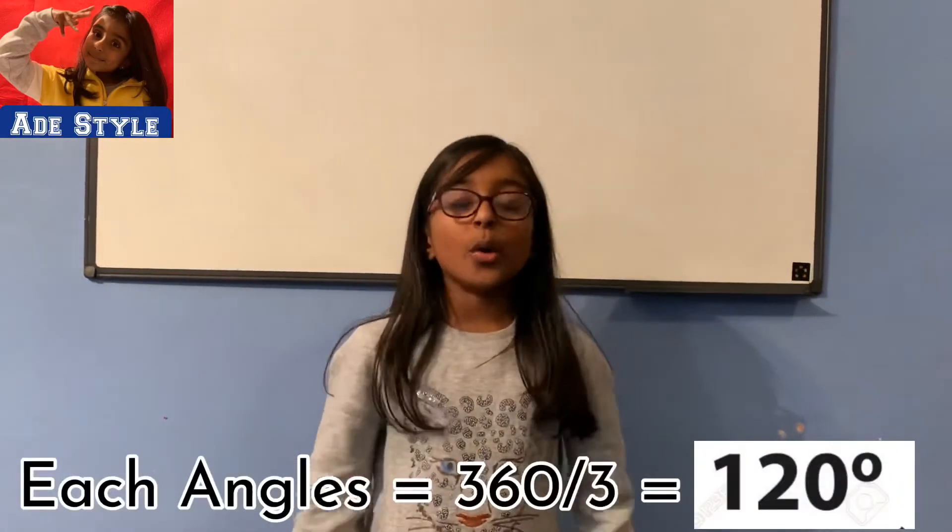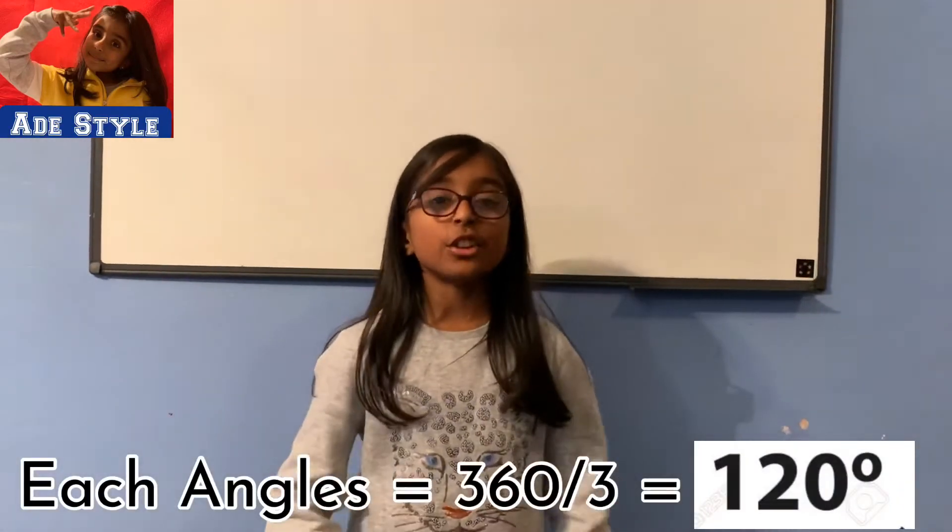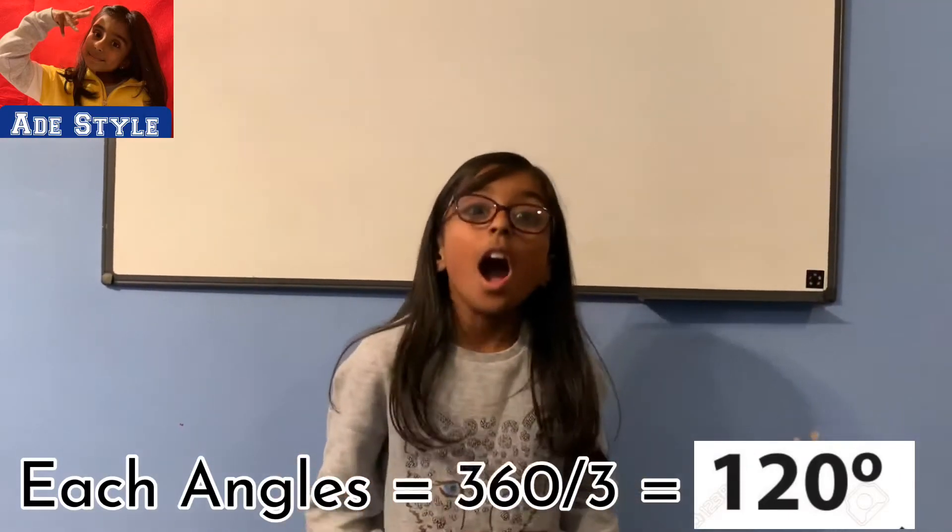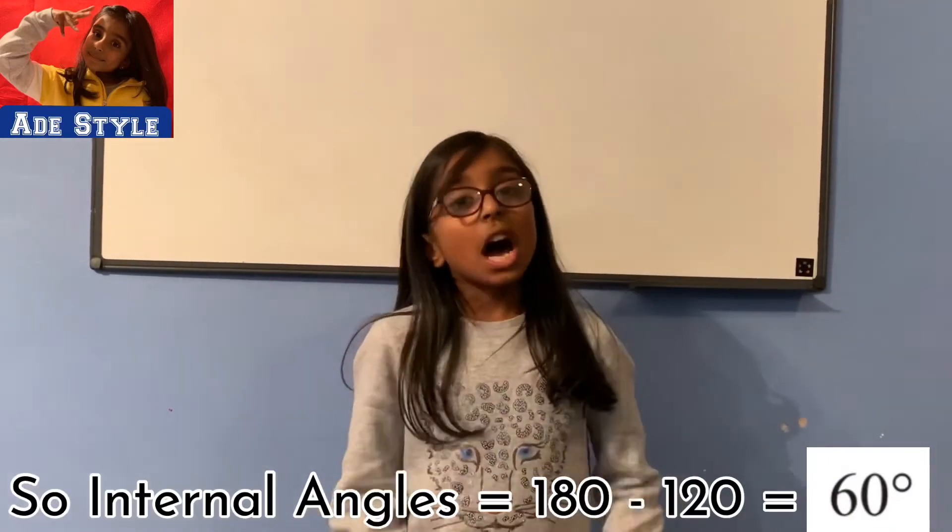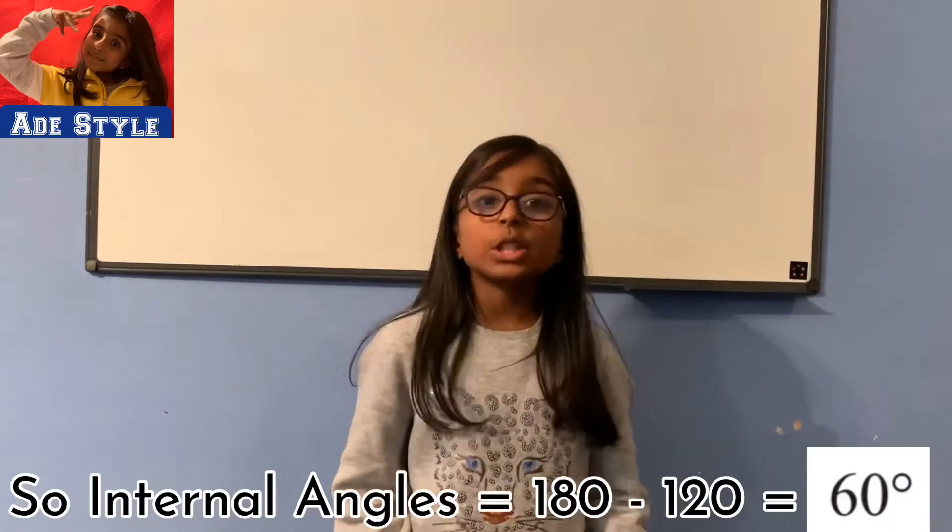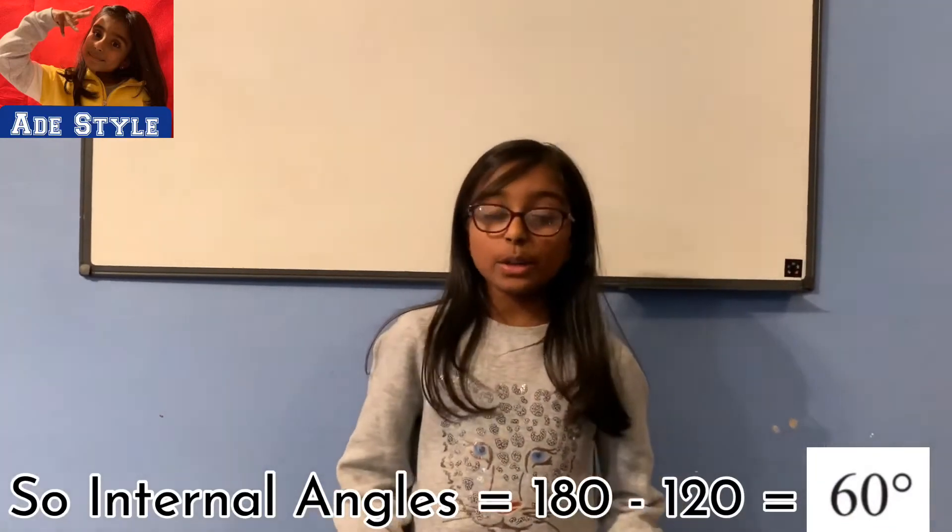Each angle equals 360 degrees divided by 3 which equals 120 degrees. So internal angle equals 180 degrees take away 120 degrees which equals 60 degrees. Any internal angle and external angle are always on a straight line.